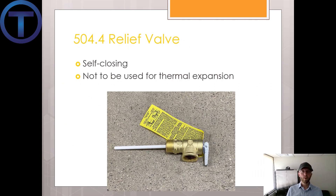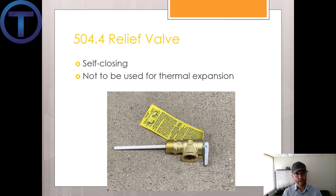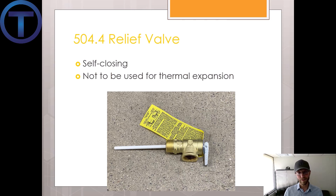504.4 talks about relief valves. These temperature pressure relief valves have to be self-closing and they are not to be used for thermal expansion. Thermal expansion is when hot water heats up and the molecules are trying to spread out. If you're containing those in a closed system, it just pushes the pressure up — that's why we have expansion tanks. However, some have thought that if you just let it go off the temperature pressure relief valve, it's still safe and not a big deal.